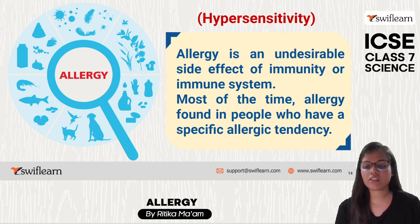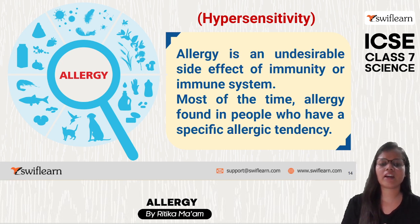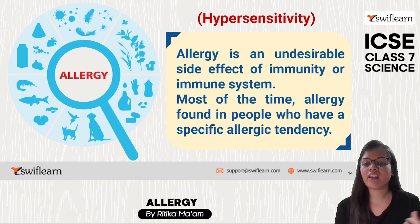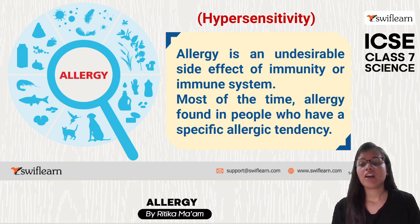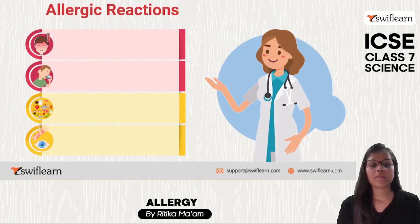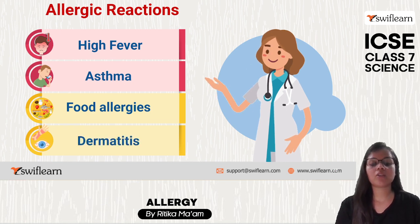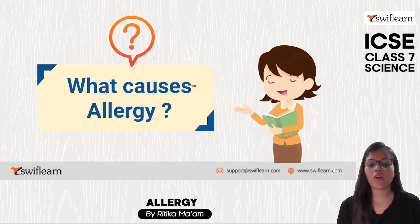Allergy is also known as hypersensitivity. It is an undesirable side effect of our immune system. Allergy is found in people who have a specific allergic tendency — some people are not comfortable in dust, some not in sunlight, and some cannot eat a particular kind of food. Allergic reactions can include hay fever, asthma, food allergies, and dermatitis.